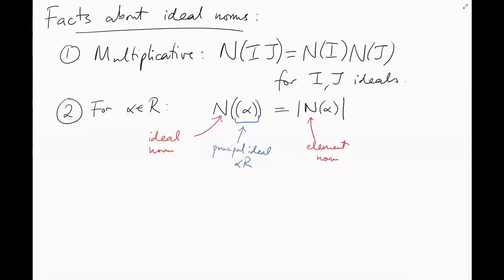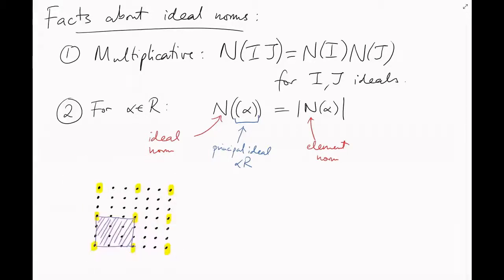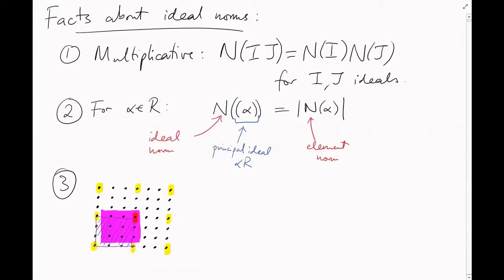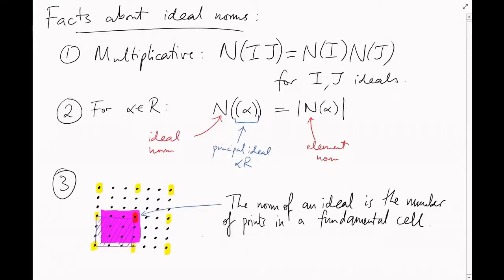Here's another perspective that'll be more useful later. Let me take one of these fundamental cells and shift it very slightly so that there are no lattice points on the boundary. The norm of an ideal is then the number of lattice points inside this region. If you know what the quotient of a ring R by an ideal I is, then you can define the norm of I to be the size of R mod I.